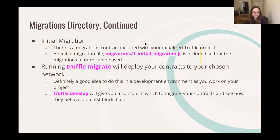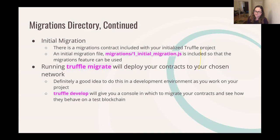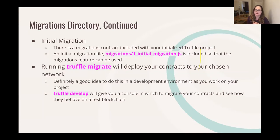Every project you initialize with Truffle will have an initial migration: 1_initial_migration.js. This is necessary so you can use the migrations feature — it goes hand in hand with a Migrations contract that is also automatically included, so you don't want to touch either of those files. When you run truffle migrate, that deploys your contract to your chosen network. You don't want to deploy to mainnet right away, so you'll want a development blockchain to test your code first.